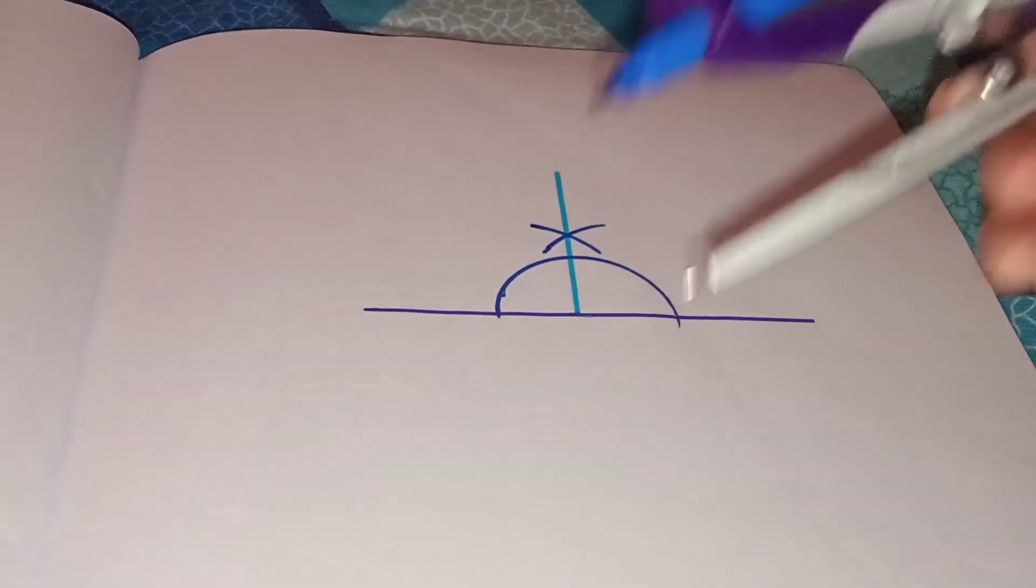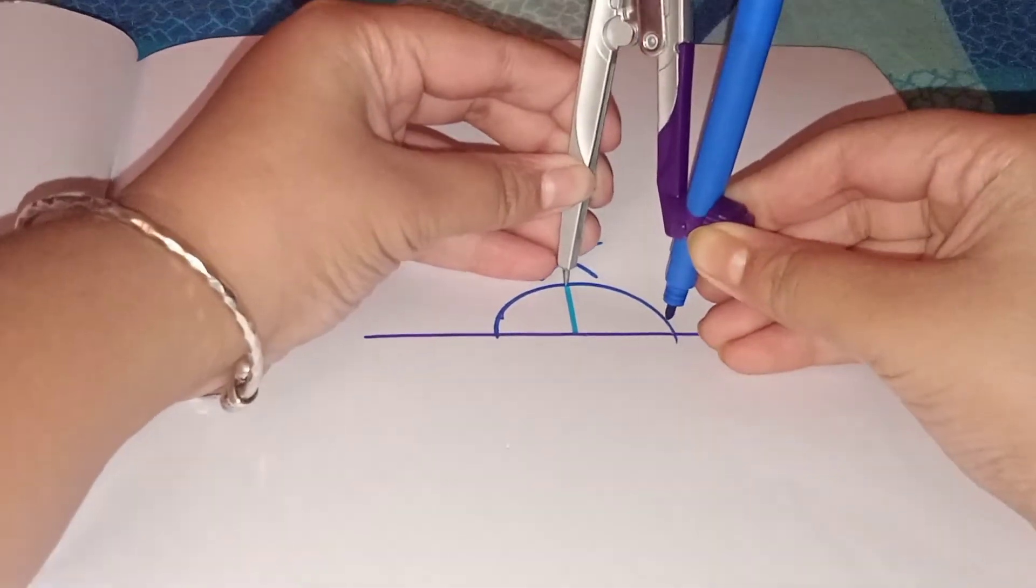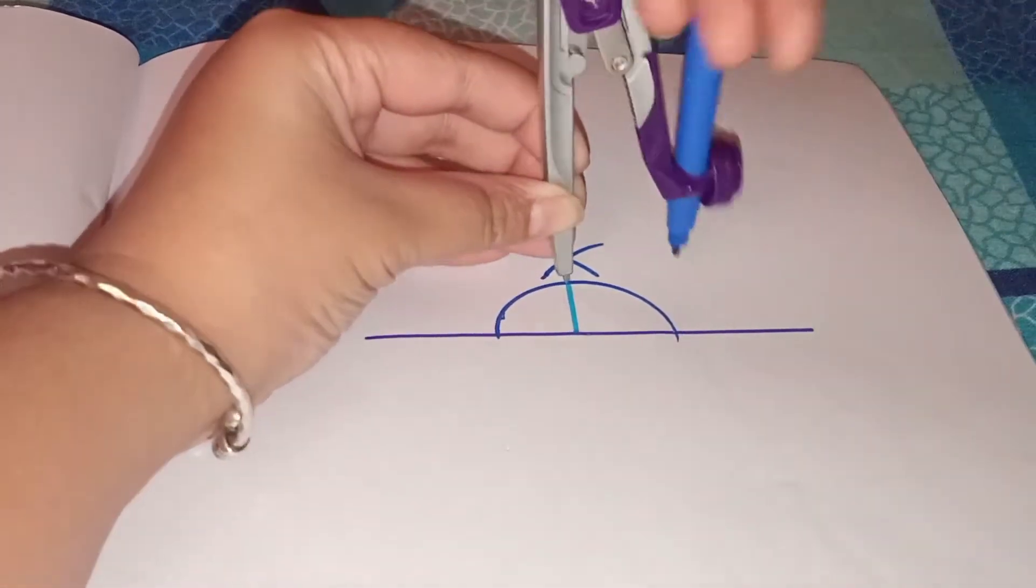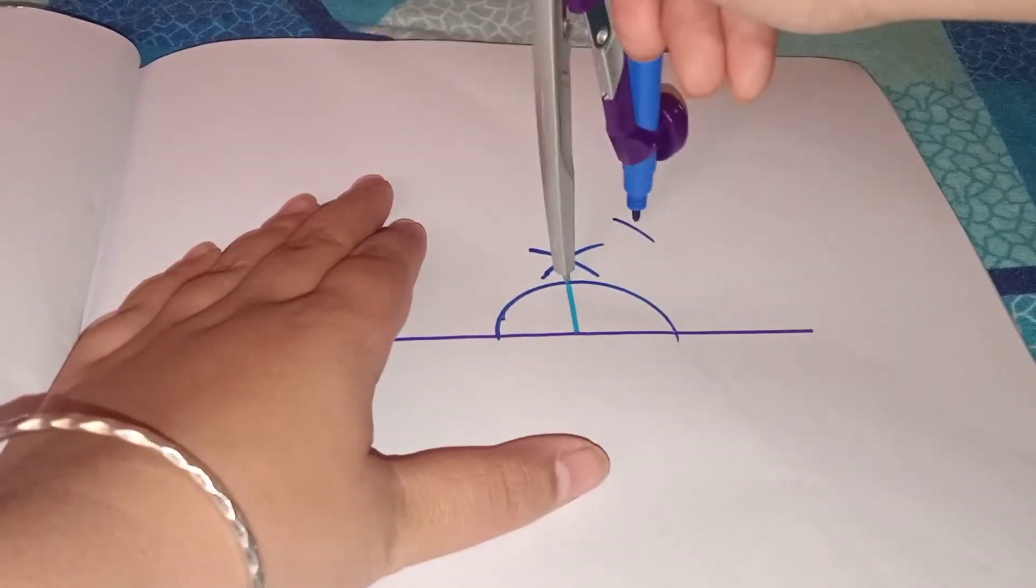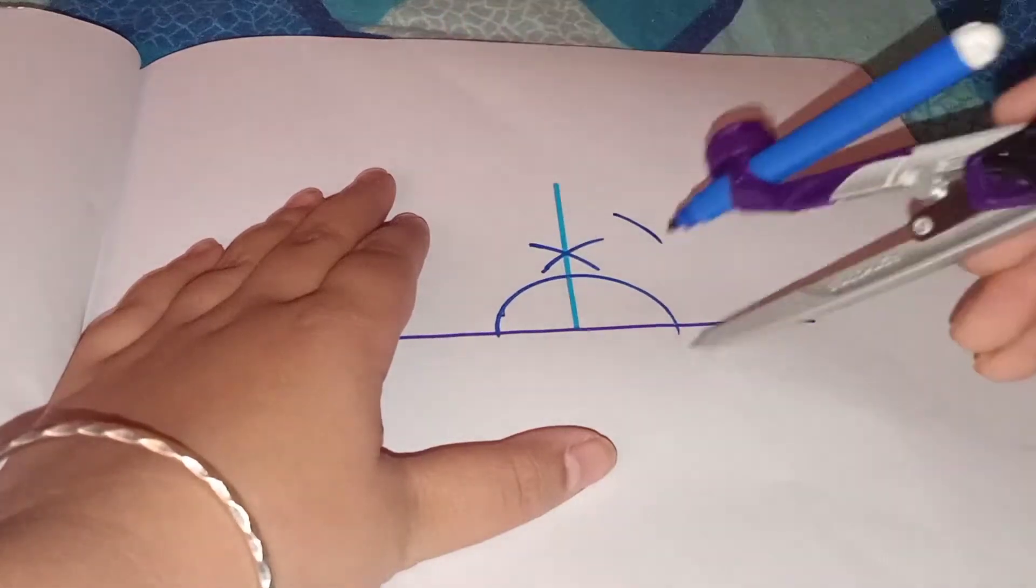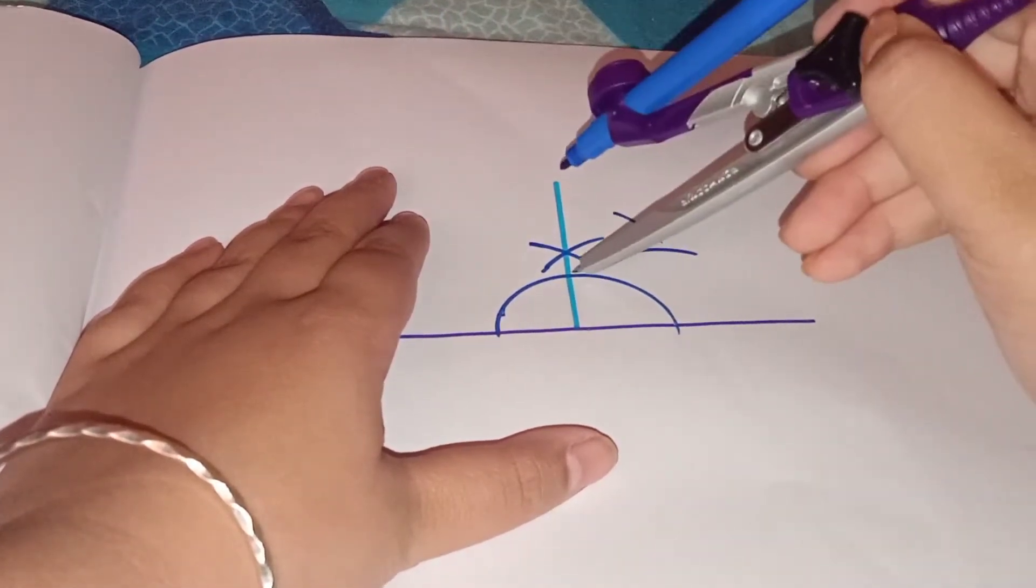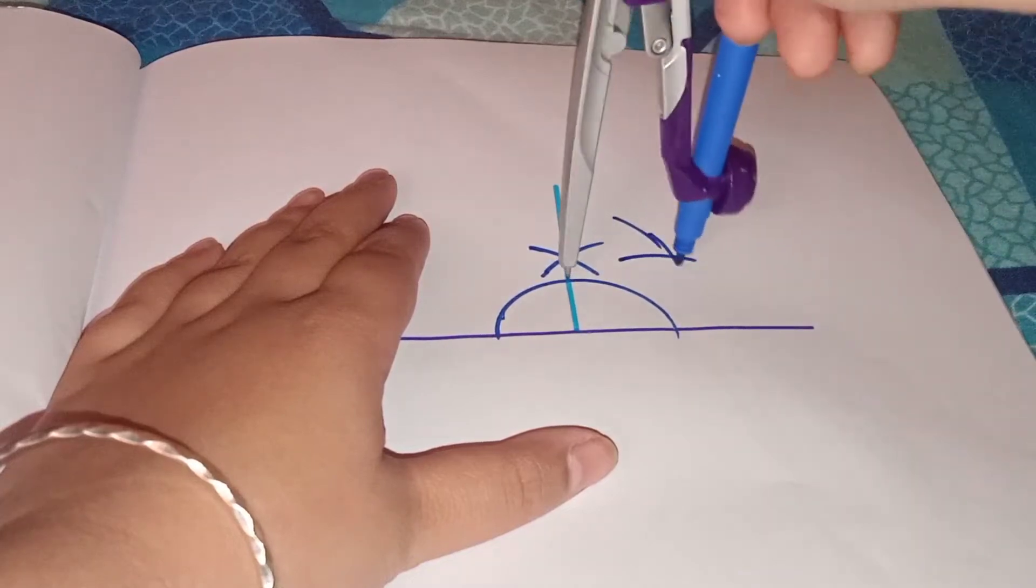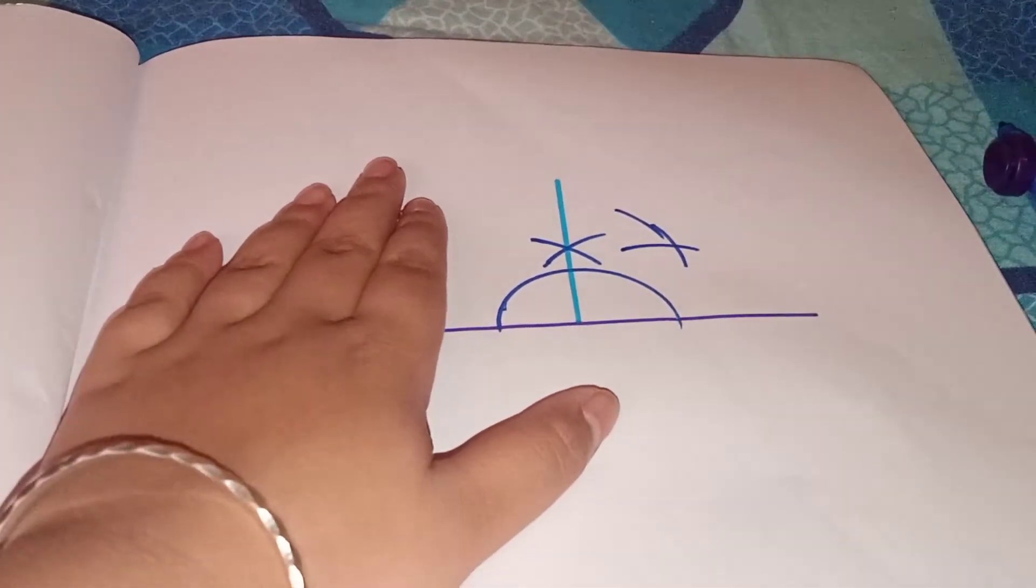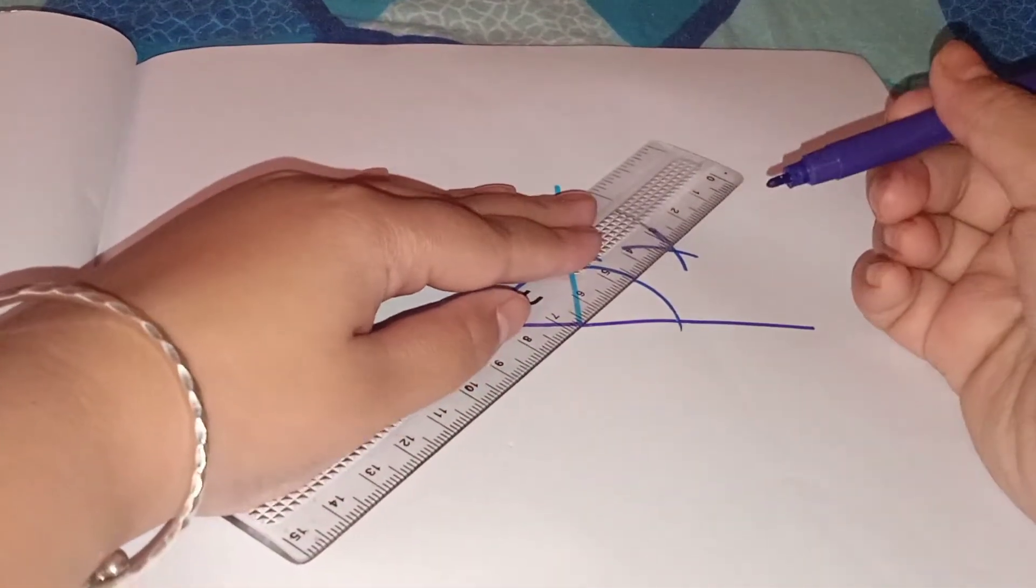Now we will do the bisector of it, so how can we do the bisector? Take that point of the line and take more than half and draw arcs like this, from one from here and another one from here.